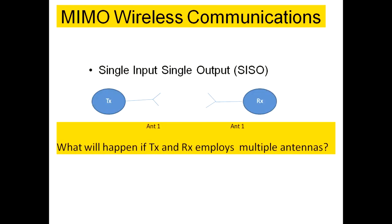There are four different antenna techniques in wireless communication. Before the MIMO concept came into the picture, we had SISO, SIMO, and MISO — those are the three versions related to MIMO.